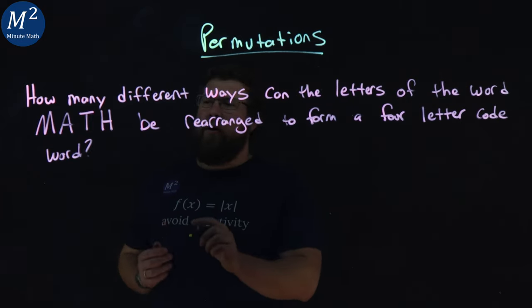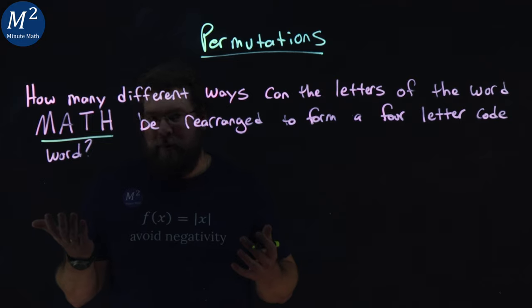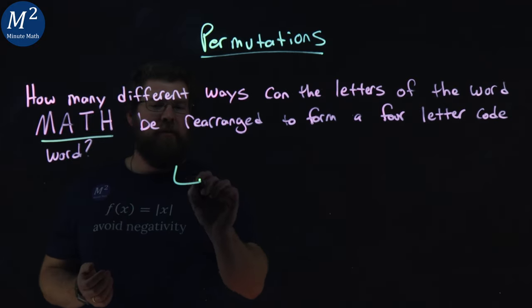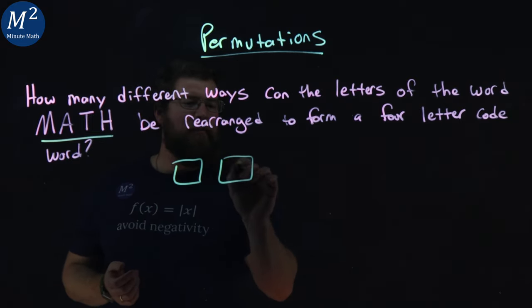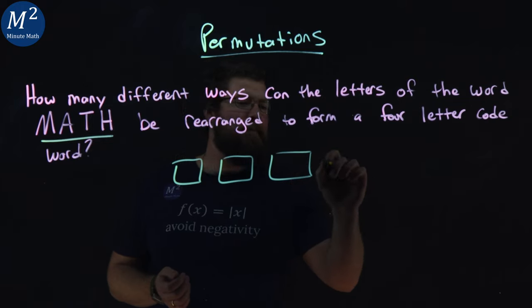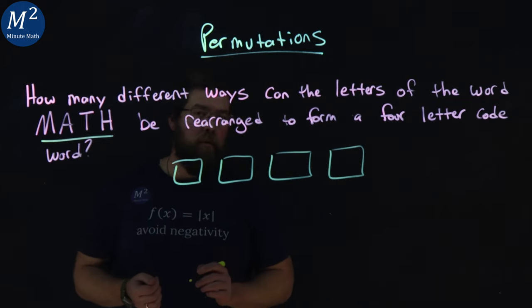The word MATH here has four letters to it. We have our first one here, then our second one, our third one, and our fourth one.